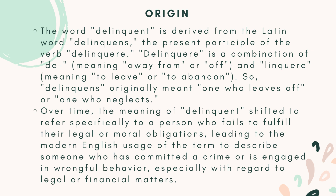Origin. The word delinquent is derived from the Latin word delinquens, the present participle of the verb delinquere. Delinquere is a combination of de, meaning away from or off, and linquere, meaning to leave or to abandon.